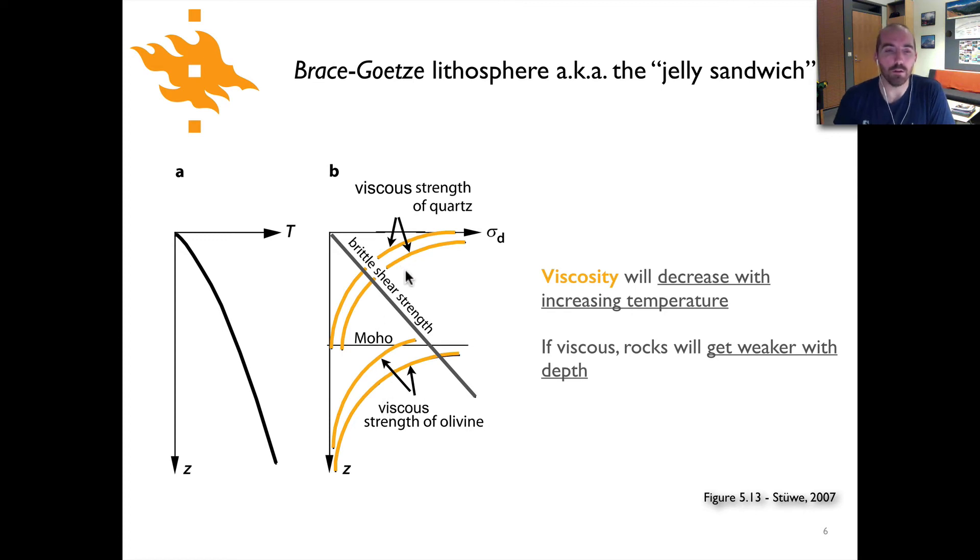The two different lines here are basically offset as a result of the strain rates that are applied in terms of calculating the viscous strength. You'll remember that the differential stress is equal to the viscosity times two times the strain rate. So if the strain rate is larger that means the differential stress is also going to be larger and that's why there's a pair of lines here, they're just for different strain rates.